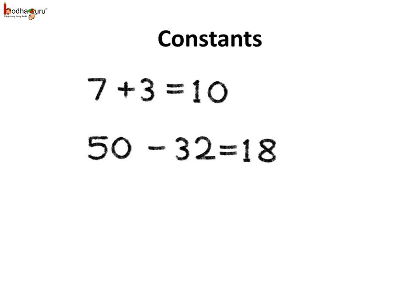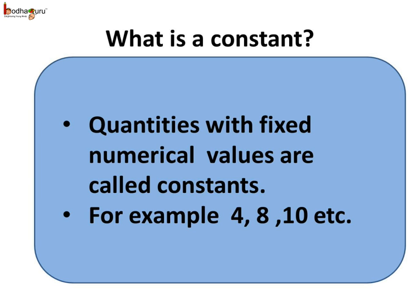Apart from variables, there are quantities with fixed numerical values, say 7, 3, 10, etc. These are called constants, as their value doesn't change.